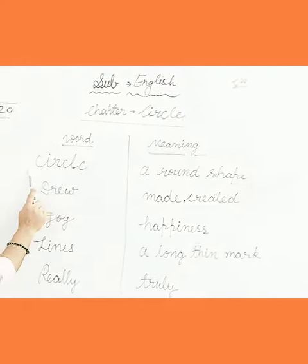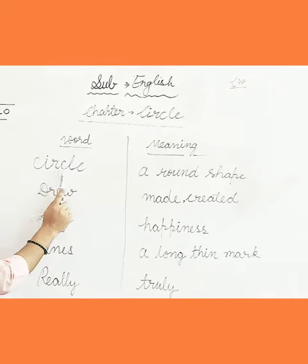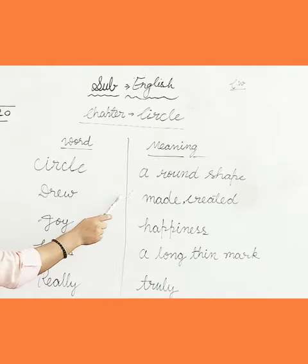So children, first word is Circle, C-I-R-C-L-E, Circle. Circle means a round shape.